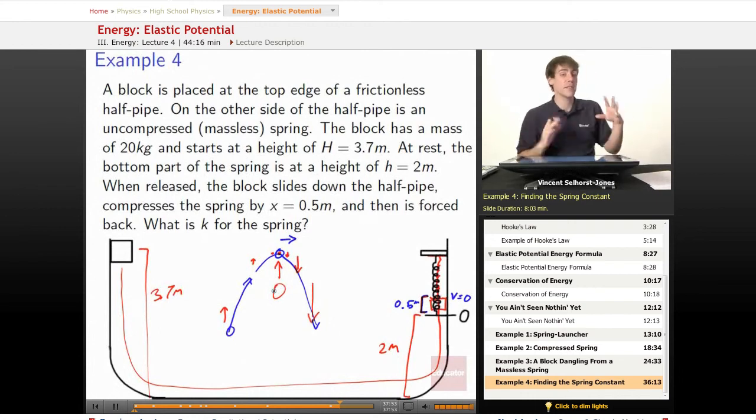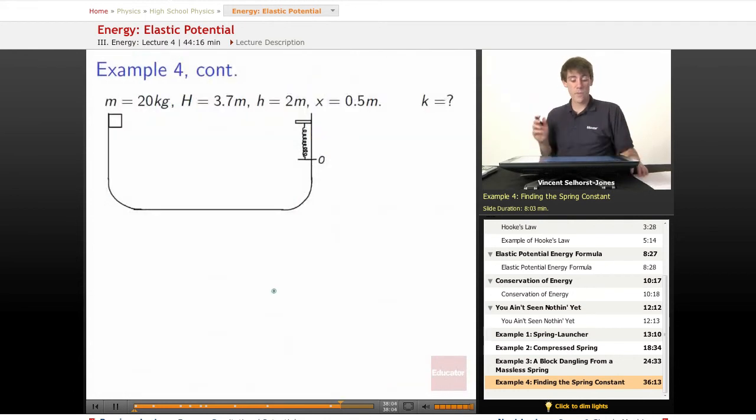So at the apex, at the very switchover between moving in one direction and coming back the other direction, you have to have a 0 velocity. So that's going to be a key point for us to understand in this problem.